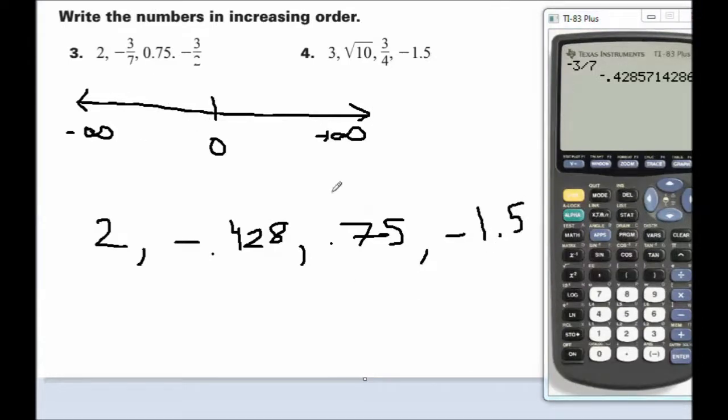Then we just say, negative 1.5 is the first to the left, then negative 0.428, 0.75, and two.